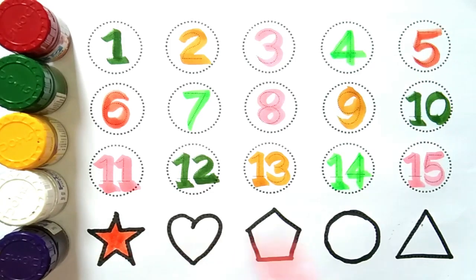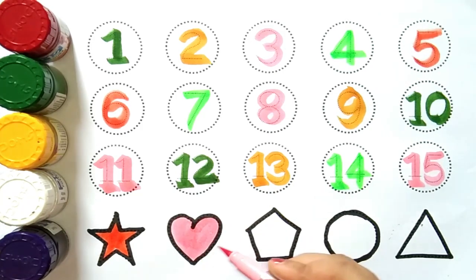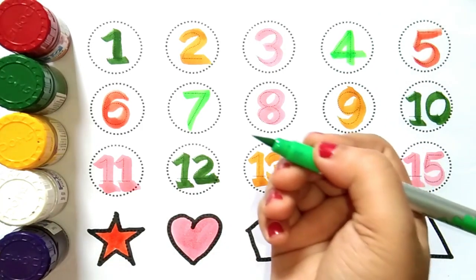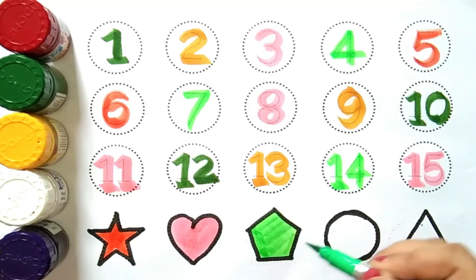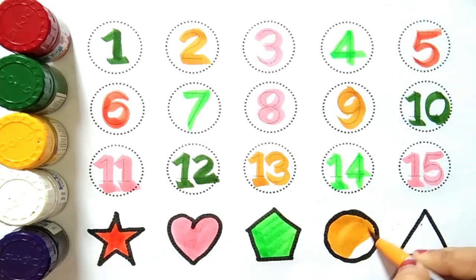Star, light pink color. Heart, light green color. Pentagon, yellow color. Circle.